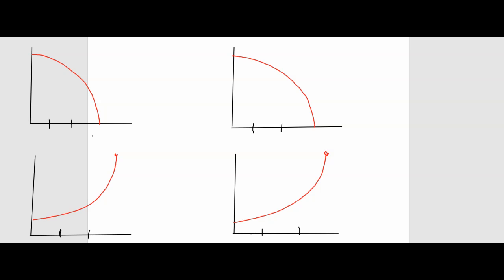So I have four graphs here. The top two, we're going to consider those the same. The bottom two, we're going to consider those the same. And we're going to do a left and a right Riemann approximation over three subintervals for both of these. On the left-hand sides we're going to do a left Riemann sum, and on the right-hand sides we'll have a right Riemann sum.